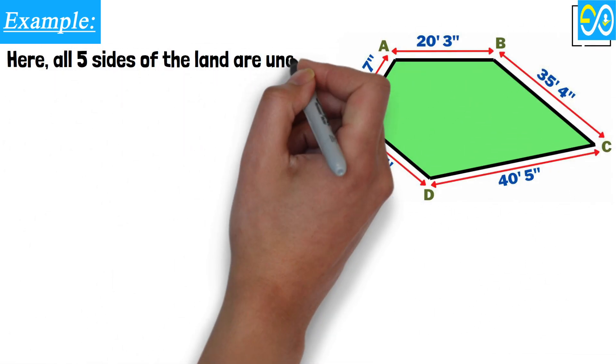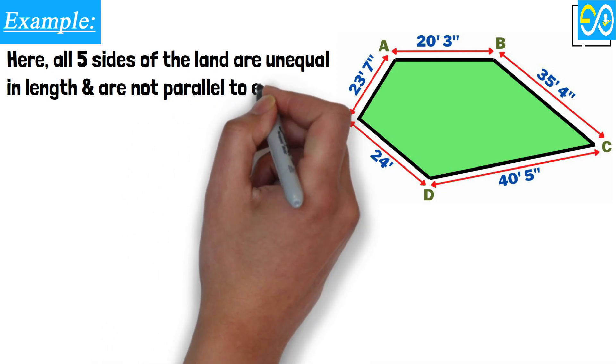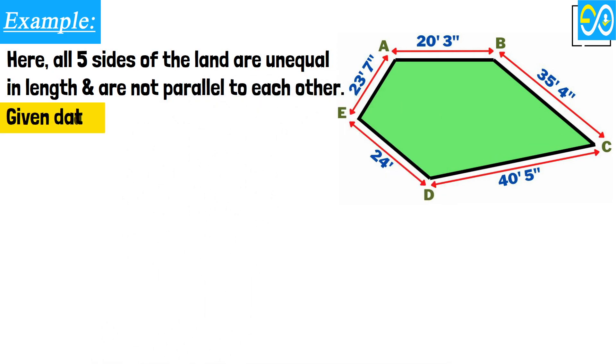Here, all five sides of the land are unequal in length and are not parallel to each other. Given data: